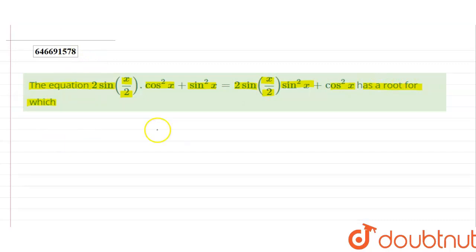For this equation, you can see both sides have 2 sin(x/2). If you take this common, this can be written as 2 sin(x/2) times cos²x minus sin²x equals cos²x minus sin²x.